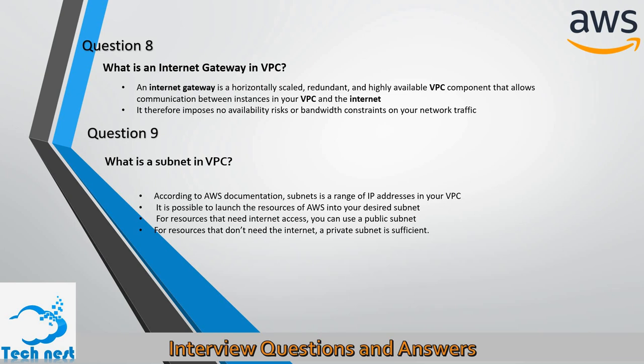Question nine: What is a subnet in VPC? According to AWS documentation, a subnet is a range of IP addresses in your VPC. You can launch AWS resources into your desired subnet. For resources that need internet access, you can use a public subnet. For resources that don't need the internet, a private subnet is sufficient.